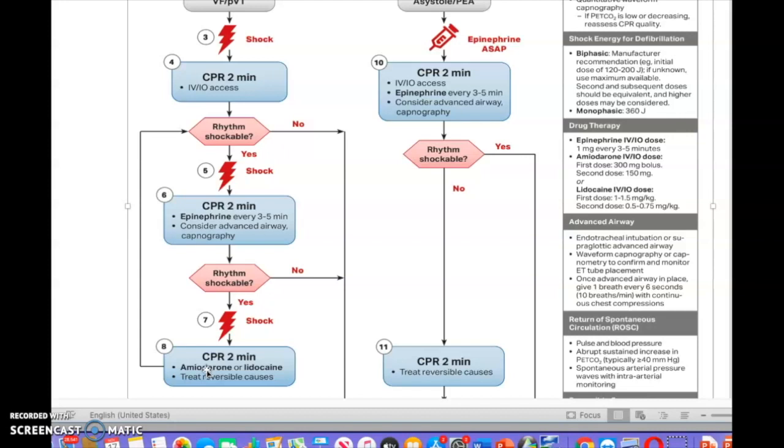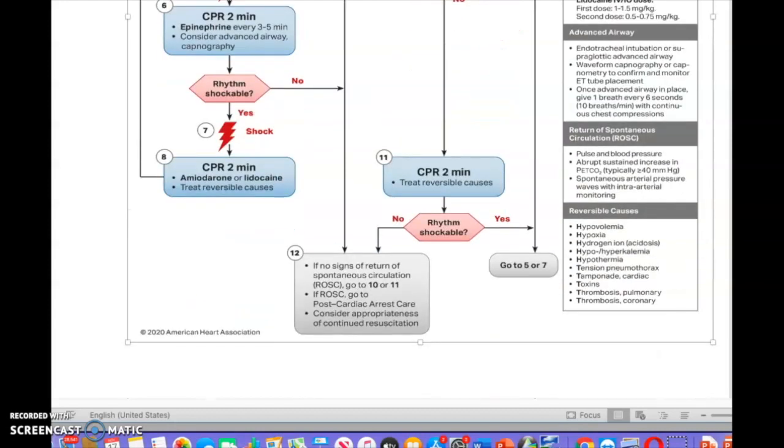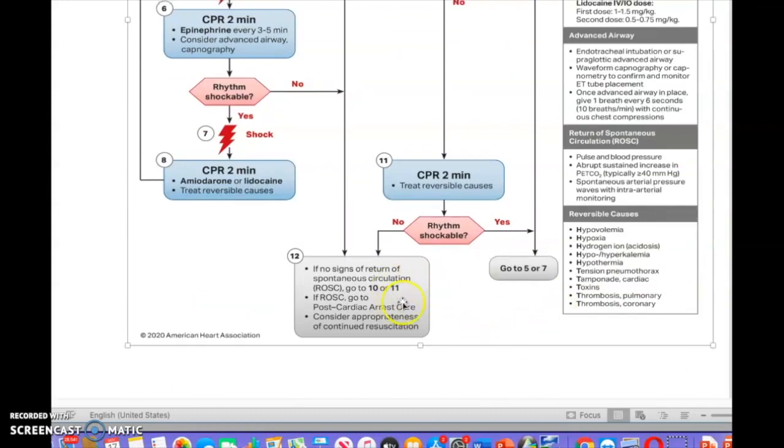Or you can give lidocaine, either one to 1.5 milligrams per kilogram or the second dose can be 0.5 to 0.75 milligrams per kilogram. This is guys, this is the algorithm. Now we didn't talk about this one. If there is no signs of return of spontaneous circulation, ROSC, go to 10 or 11.